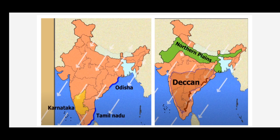The retreating monsoons are generally dry except on the coastal areas of Tamil Nadu, Odisha, and parts of Karnataka. The reason is that when they are blowing over the Bay of Bengal, they collect moisture. The interior parts of the Deccan Plateau remain dry because they lie in the rain shadow regions of the Eastern Ghats.